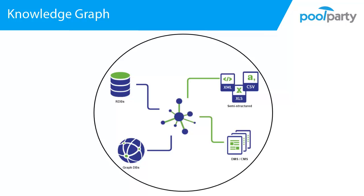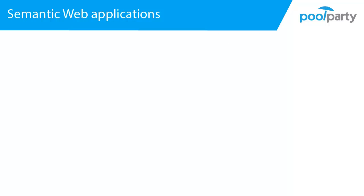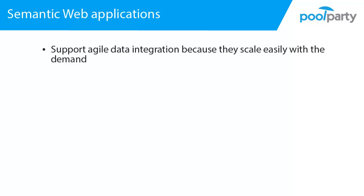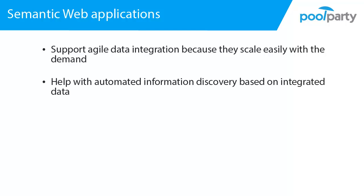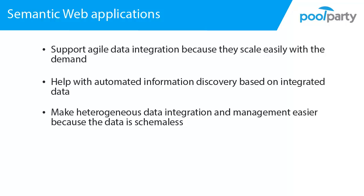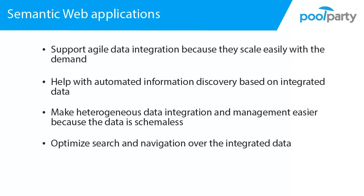Moreover, semantic technologies are flexible to accommodate an agile data integration process and changing data types. To sum up, semantic web applications support agile data integration because they scale easily with demand, help with automated information discovery based on integrated data, make heterogeneous data integration and management easier because data is schemaless, and optimize search and navigation over the integrated data.